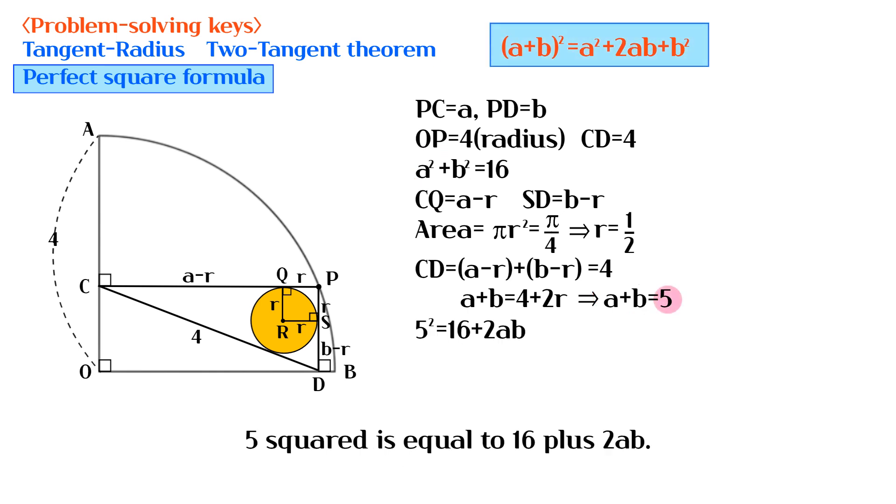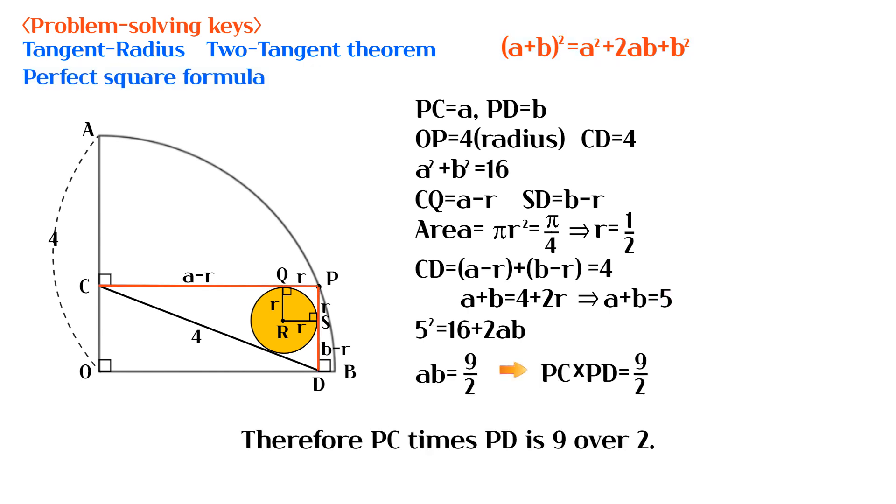5 squared is equal to 16 plus 2 times AB. Therefore, PC times PD is 9 over 2.